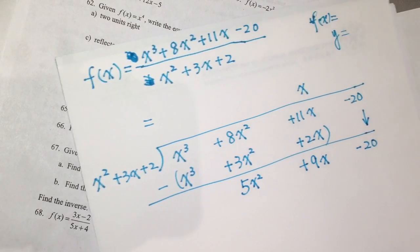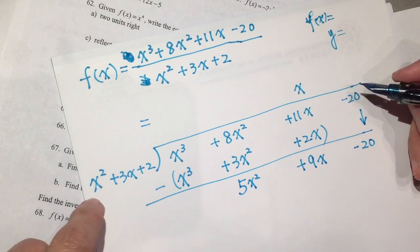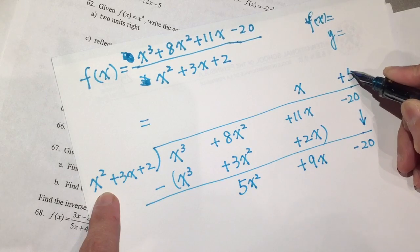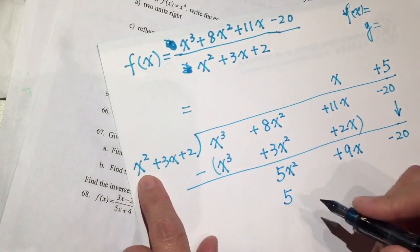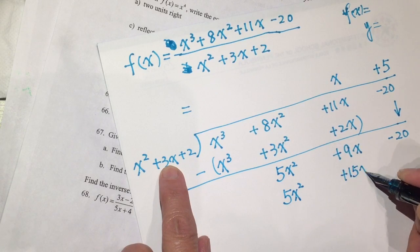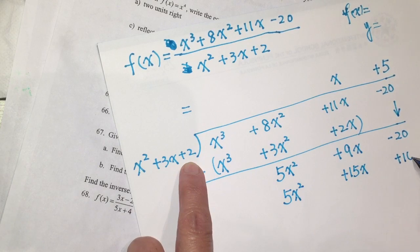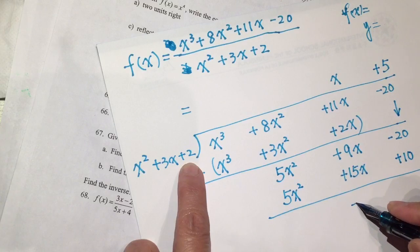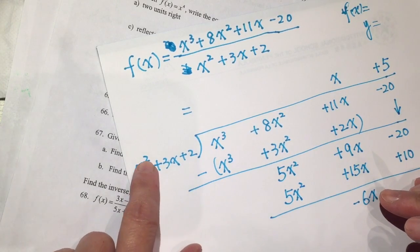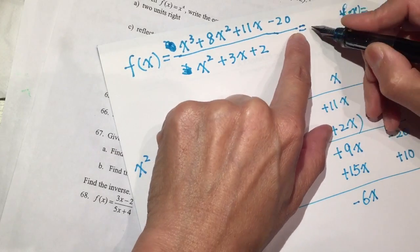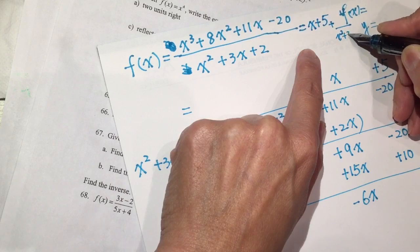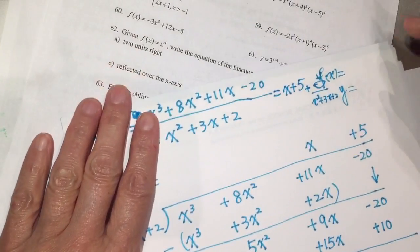Next we put plus 5. Five times x squared is 5x squared, plus 15x, plus 10. Subtracting gives negative 6x minus 30, but this degree is lower than the divisor, so we stop. The result is x plus 5, and the rest is the remainder.